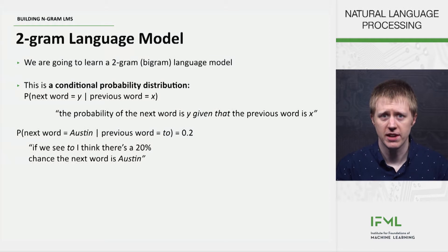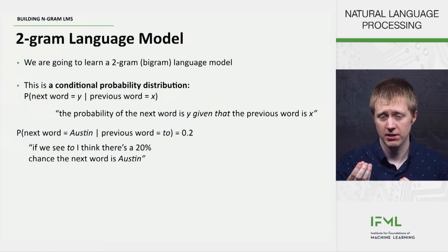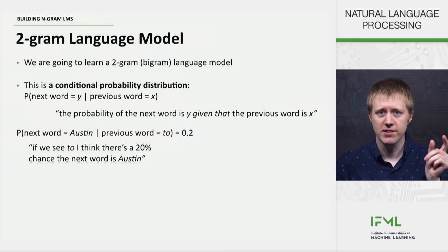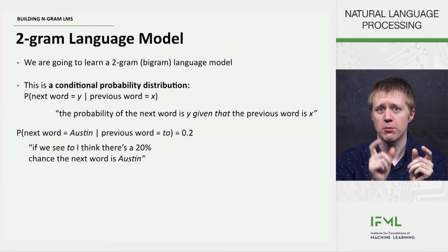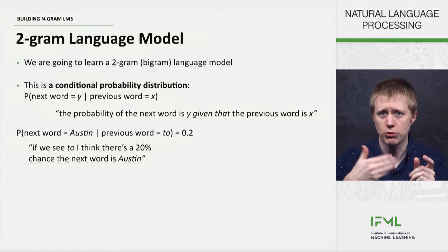For example, the probability of the next word equals 'austin' given previous word equals '2' — this is something our model needs to keep track of and that we can ask the model about. In this case the number I made up was 0.2, which means a 20% chance — 0.2 out of 1, or 20 out of 100 — that the next word is 'austin'.